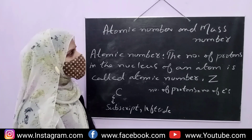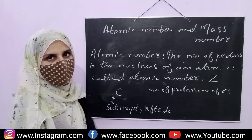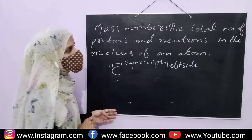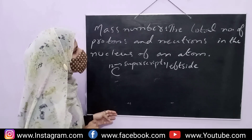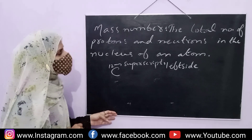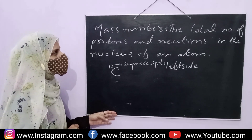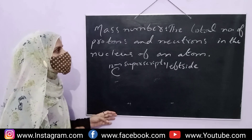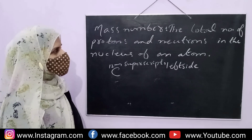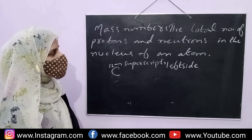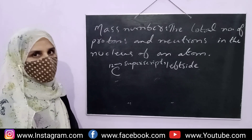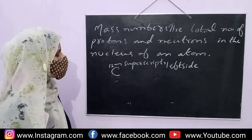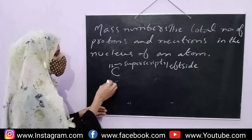Now we are discussing mass number. The total number of protons and neutrons in the nucleus of an atom is called the mass number.